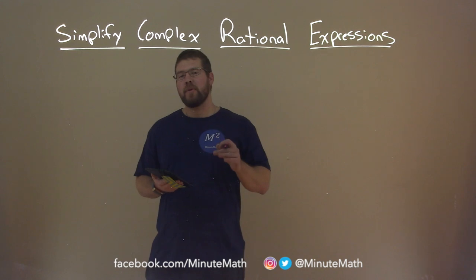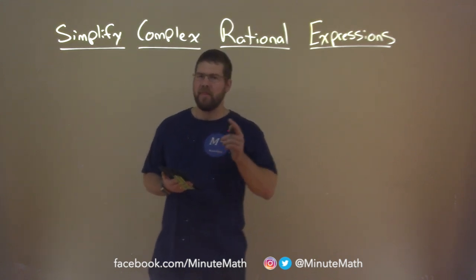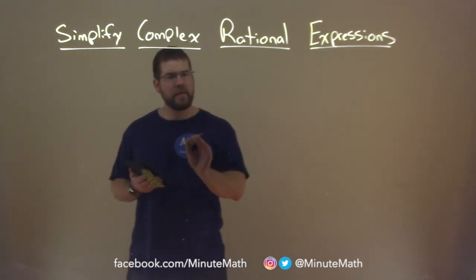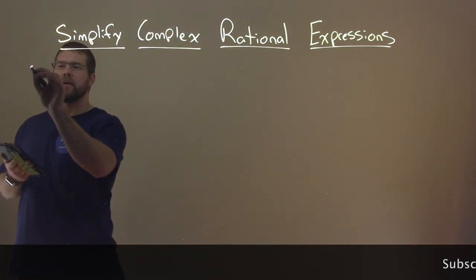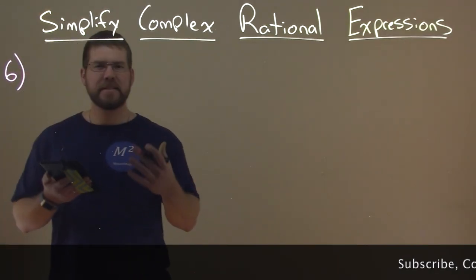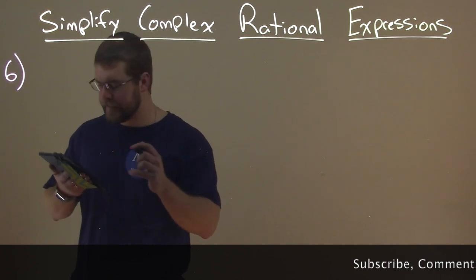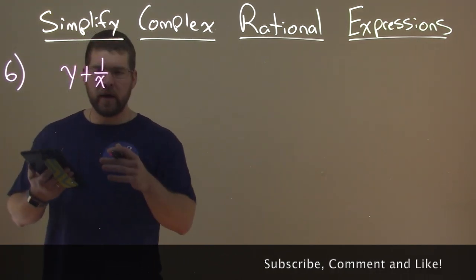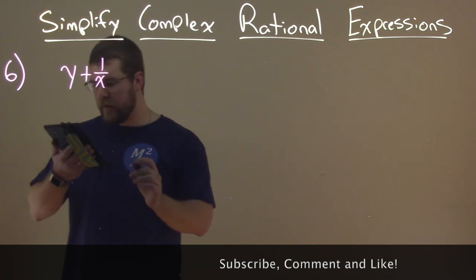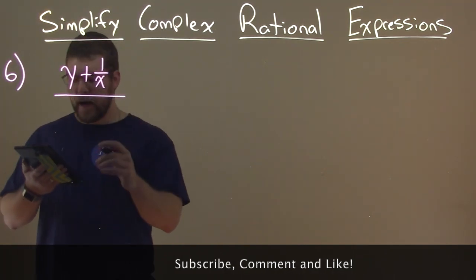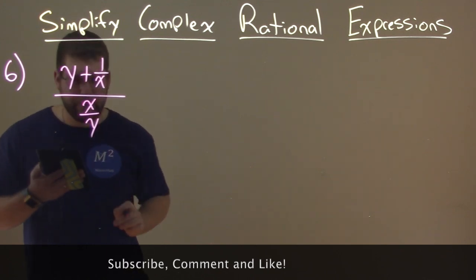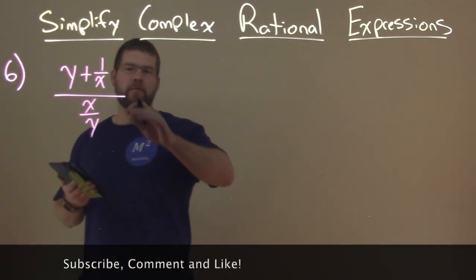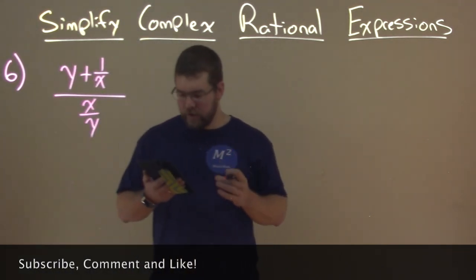So complex rational expressions really aren't that complex. It's a little different than we're used to seeing. So let's see an example here. And you can see why they call this complex. We have y plus 1 over x, okay, not too bad to simplify. But now we're dividing that by x over y. And so we have basically two sets of division here.